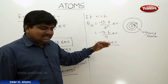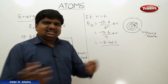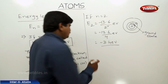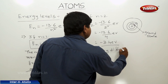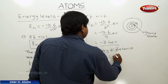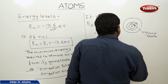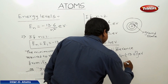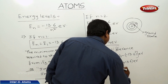The electron is excited from one energy level to another by receiving some energy due to electron collision — this is all based on Bohr's assumptions. The energy difference is E2 minus E1, which is minus 3.4 minus of minus 13.6 eV. Therefore, it is minus 3.4 plus 13.6 eV, giving a value of 10.2 eV.